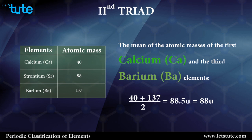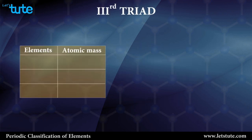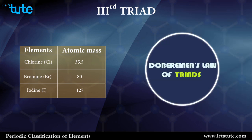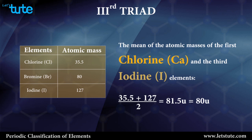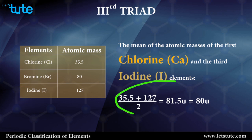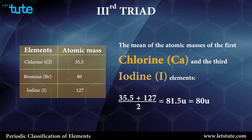Similarly, Dobereiner's law of triads is also applicable to the last triad — chlorine, bromine, and iodine. By applying Dobereiner's law of triads, we get the mean of the atomic masses of chlorine and iodine to be (35.5 + 127) / 2, which equals 81.5, approximately equal to the atomic mass of the middle element, bromine.